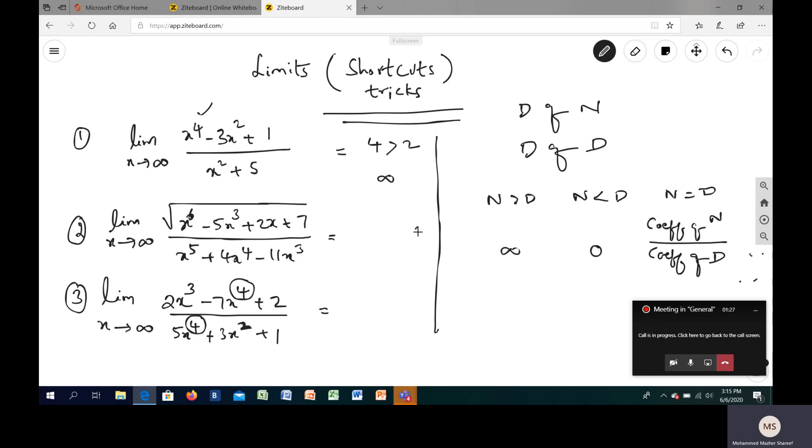Now when I look at here, degree of the denominator is five. When I compare with the degree of numerator, don't say it is six because it is the square root, so when you take it out it is going to be x raised to three. So basically degree is three, which is lesser.